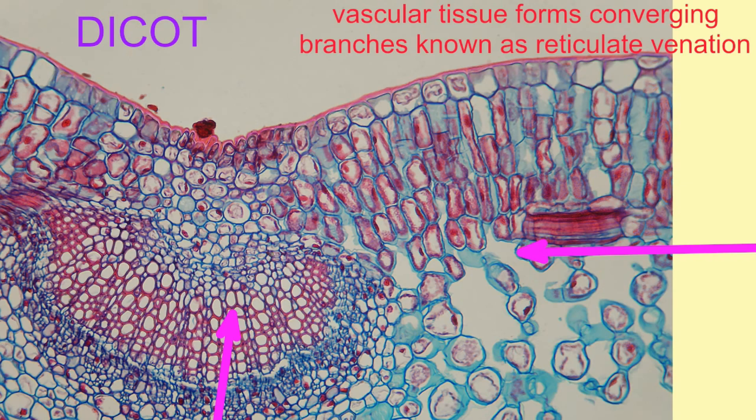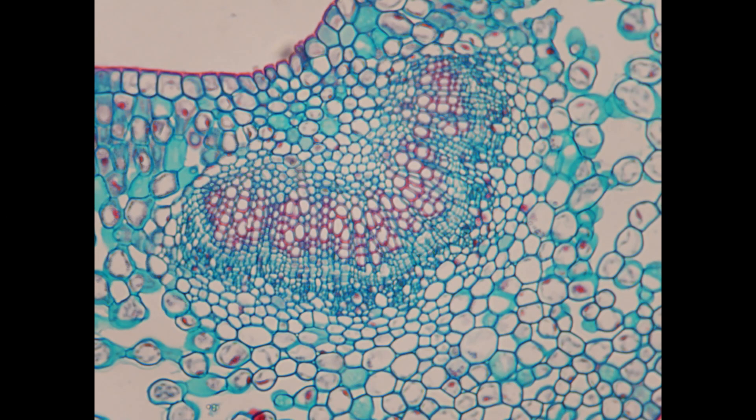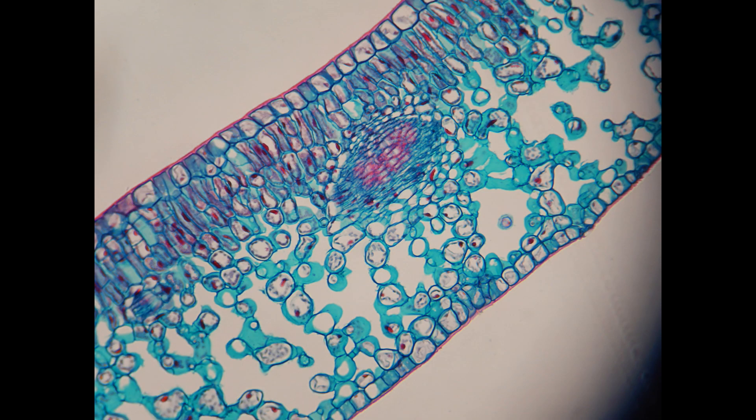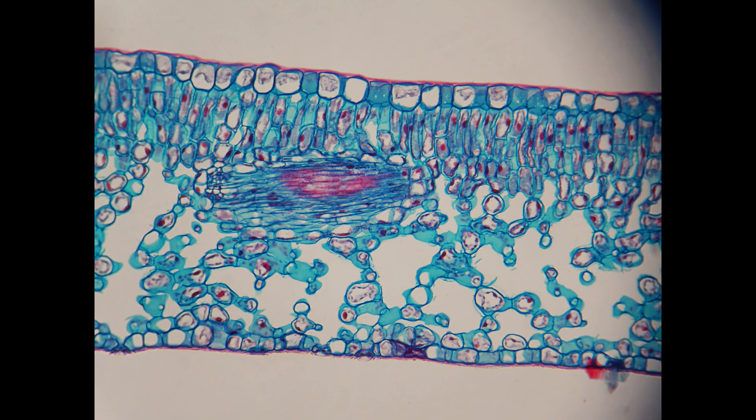In the dicots, these veins branch so that they converge with the large vessels along the midrib in the middle of the leaf. One can see this in the leaves macroscopically.